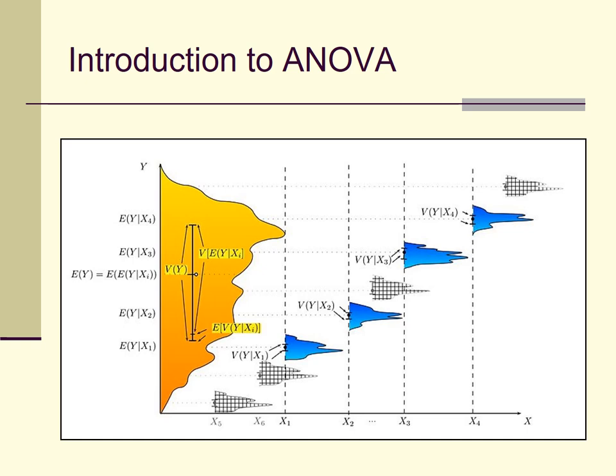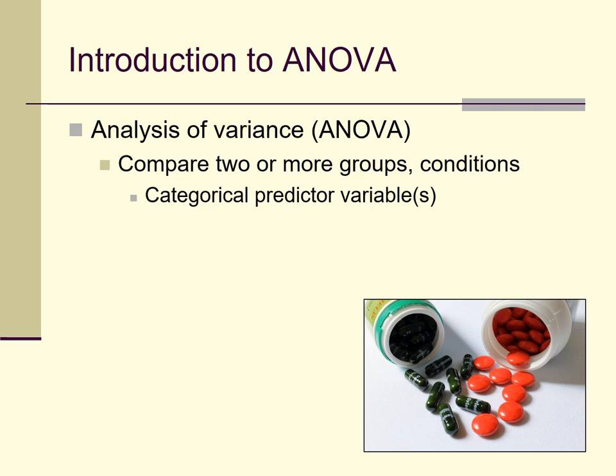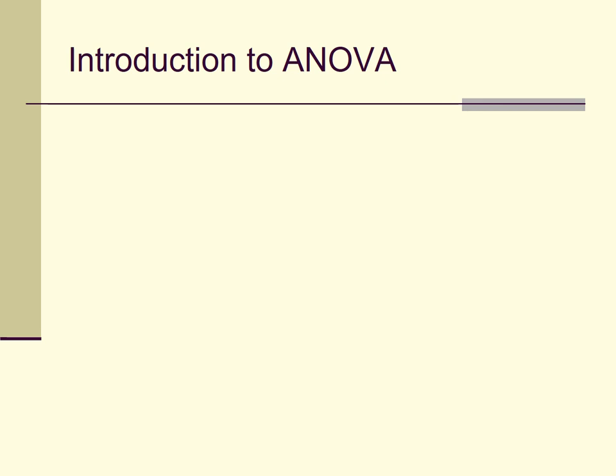ANOVA is an acronym standing for Analysis of Variance. It's an analytic technique developed originally by R.A. Fisher, and it's commonly used when we have a predictor variable — sometimes called a factor — that is categorical, having two or more discrete levels. In situations with only two levels, like treatment versus control, you could use a t-test, but with three or more levels you need to do an ANOVA because you're dealing with a categorical predictor variable.